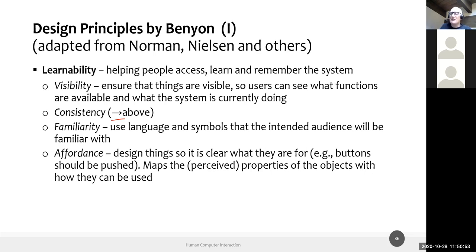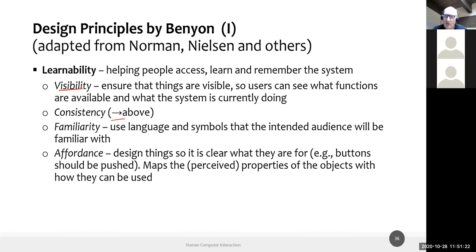Principles are grouped into broad categories. Learnability covers helping people understand how the interface works — learning it the first time and remembering it on subsequent visits so they don't have to relearn it. Visibility is a key point from Norman: the system should provide the user a clear representation of its internal state and what it currently knows.